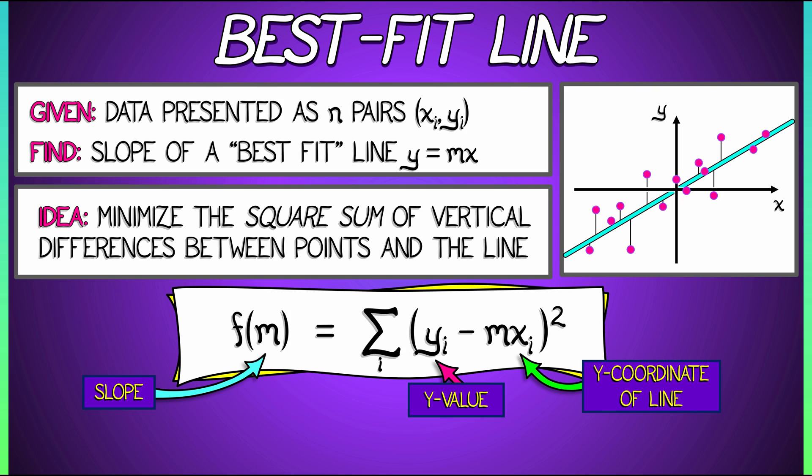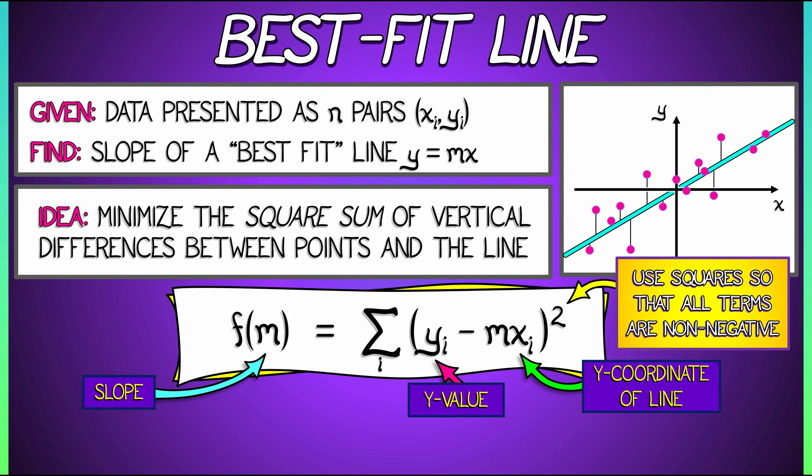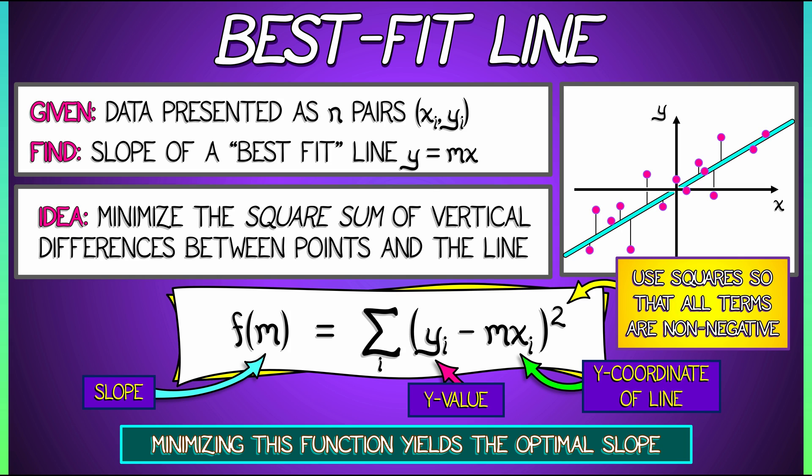Now, why are we squaring it? We're squaring it so that all the terms in this sum are non-negative. That way, any time you move away from that line, it picks up additional cost in this function f, and we want to minimize that cost. Minimizing this function f as a function of slope m yields the optimal slope with respect to this cost function.